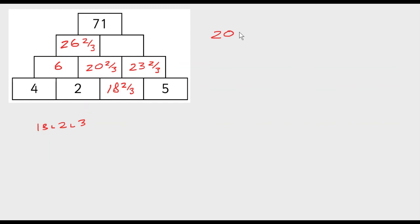20 plus 2 thirds, 20 and 2 thirds means you add those together. Plus 23 plus 2 thirds gives us 43 plus 2 thirds plus 2 thirds. And 2 thirds plus 2 thirds is 4 thirds. So that's 43 plus 4 thirds. Well, 4 thirds is 3 thirds and 1 third. And 3 thirds is 1. So that's 43 plus 1 plus 1 third, which is 44 and 1 third.